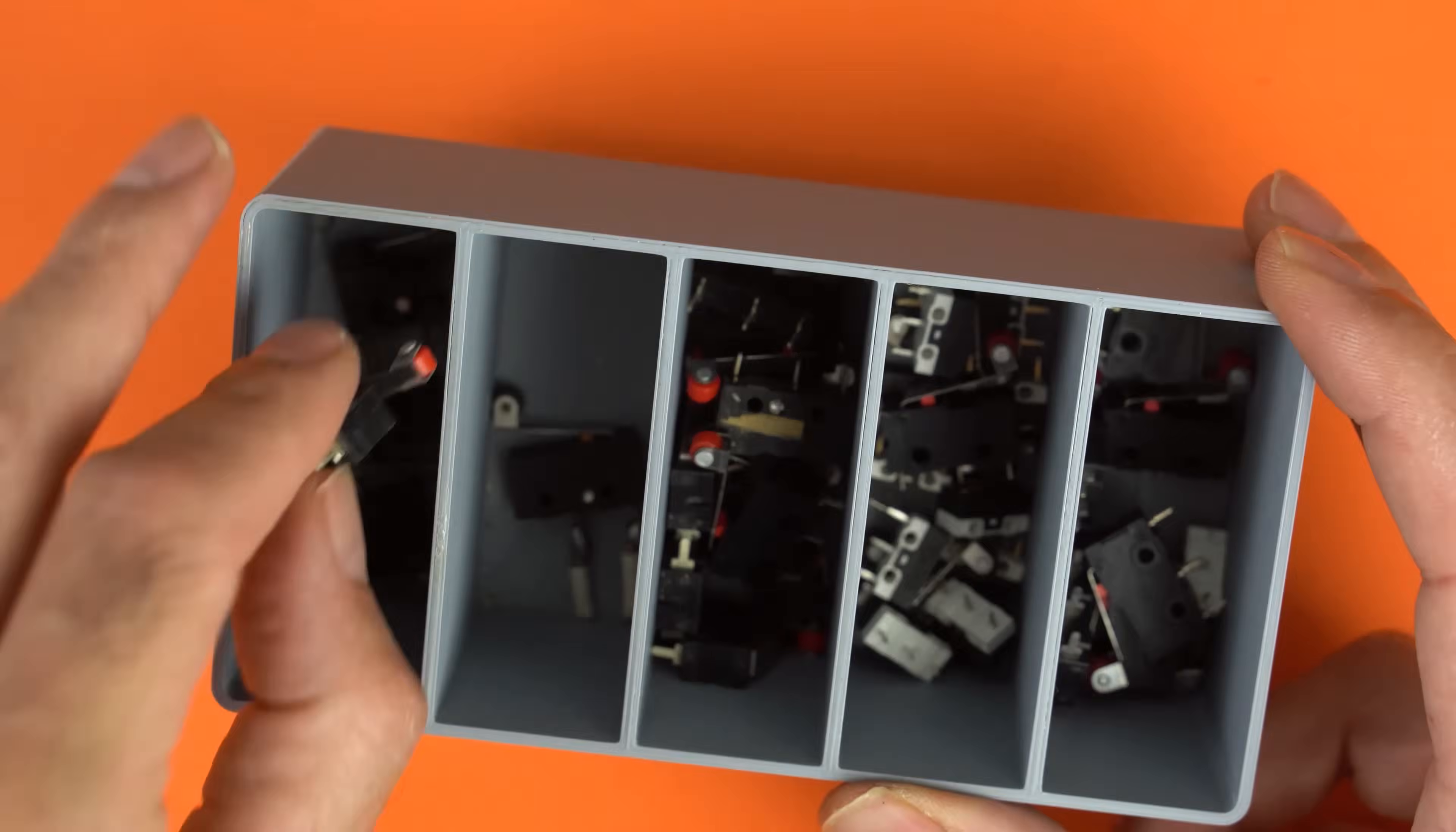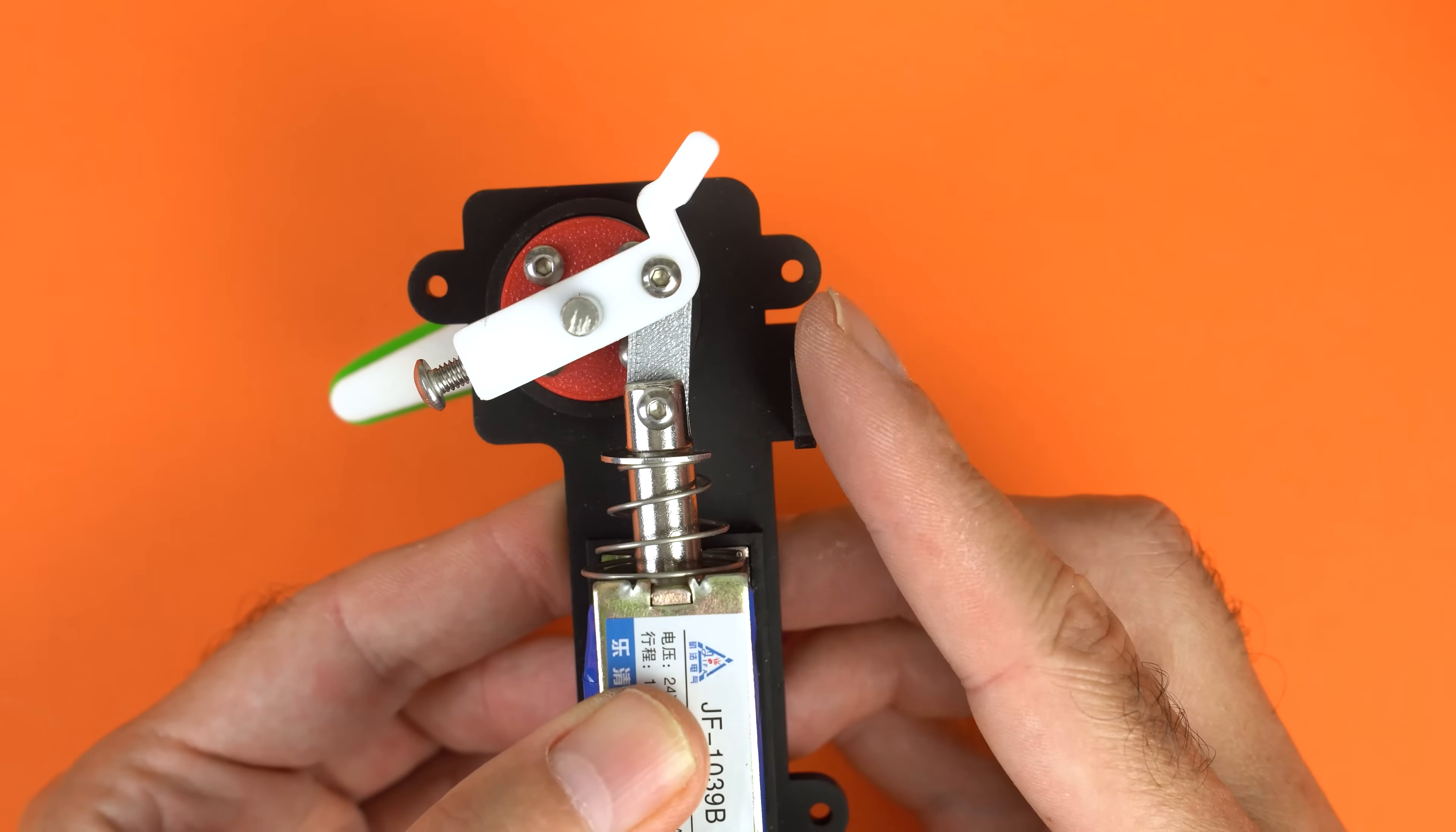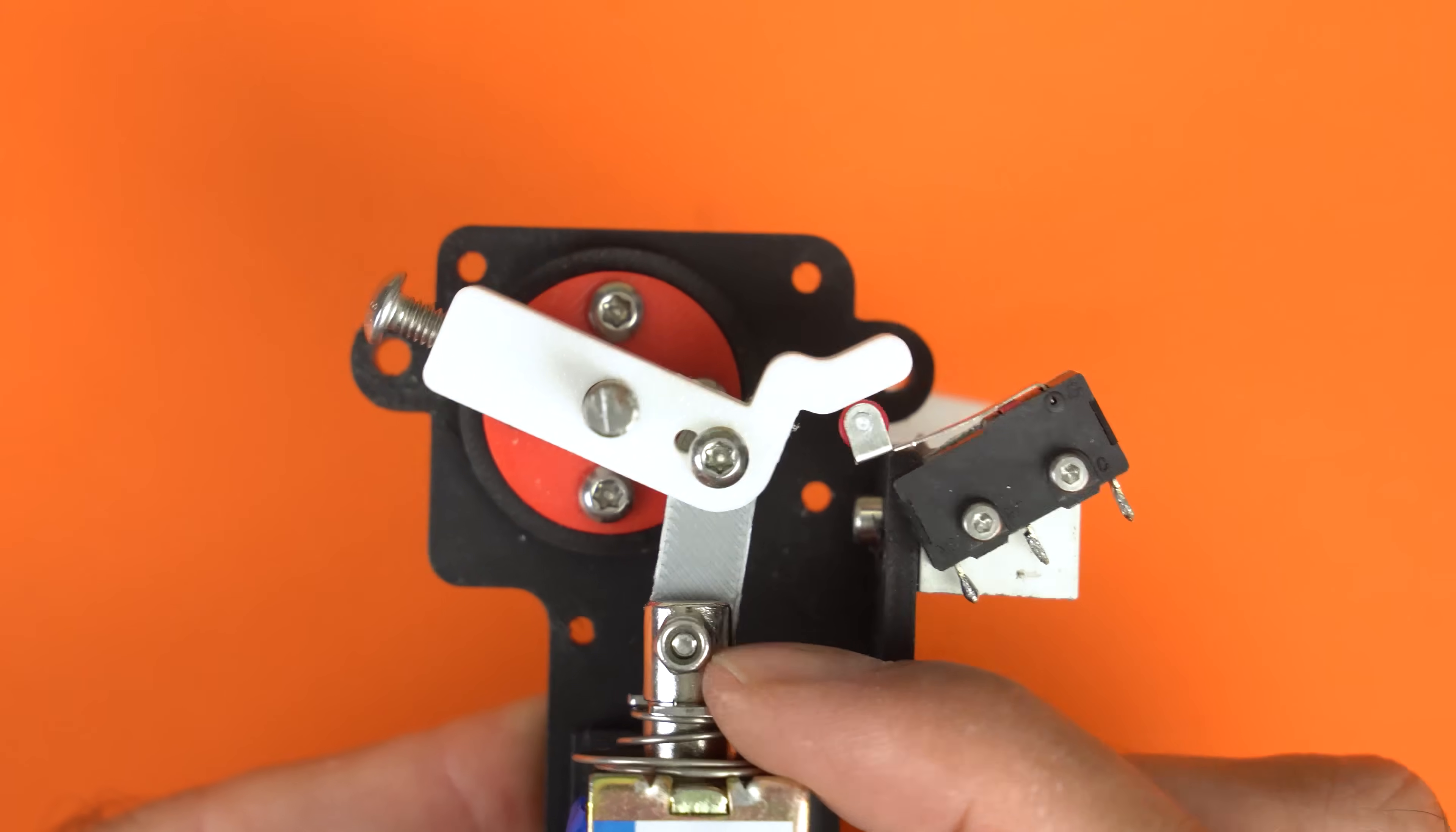But wait, aren't we forgetting something? Yes, the microswitch contact that switches the line from 24V down to a much lower voltage. Remember? I'll skip the DIY steps and show you the finished result, mounted with this aluminum bracket. When the flipper bat reaches its full stroke, it activates the switch.